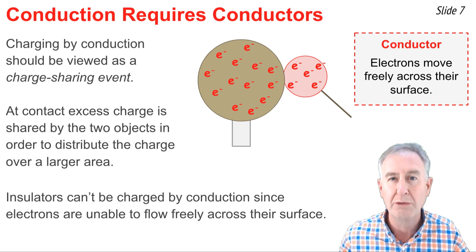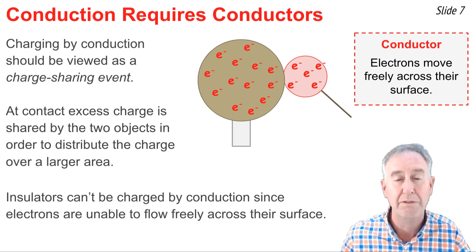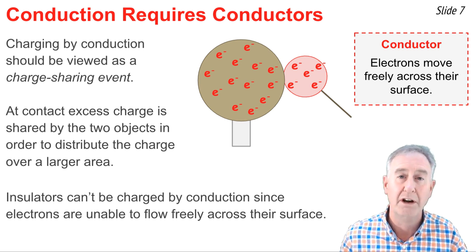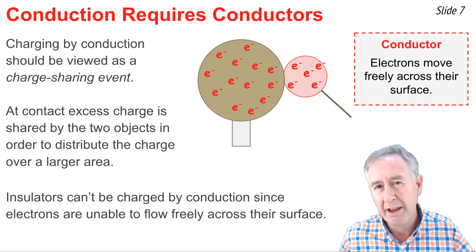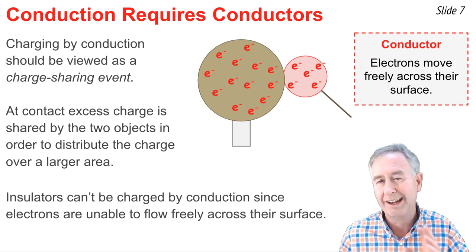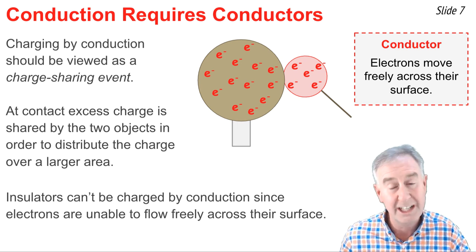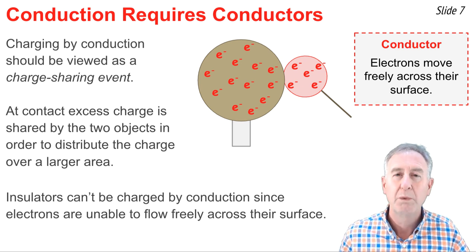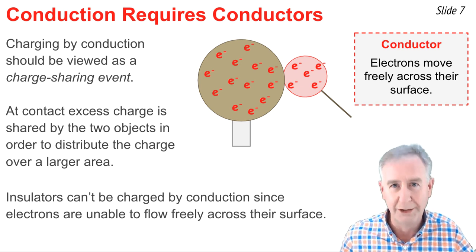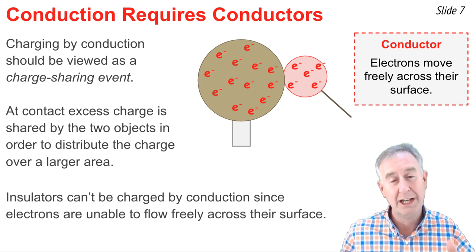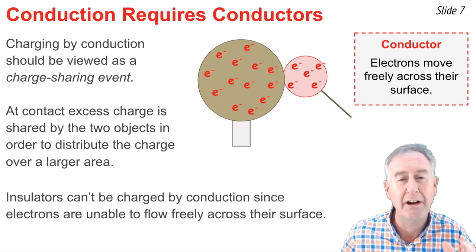Insulators can't be charged by conductors because insulators prevent the free flow of electrons across their surface. So what would happen if you touched, say, a conductor to an insulator or an insulator to an insulator? What would happen then? Well, a number of things. And the first one is nothing could happen. But the second thing is that something could happen, and that covers it all there.